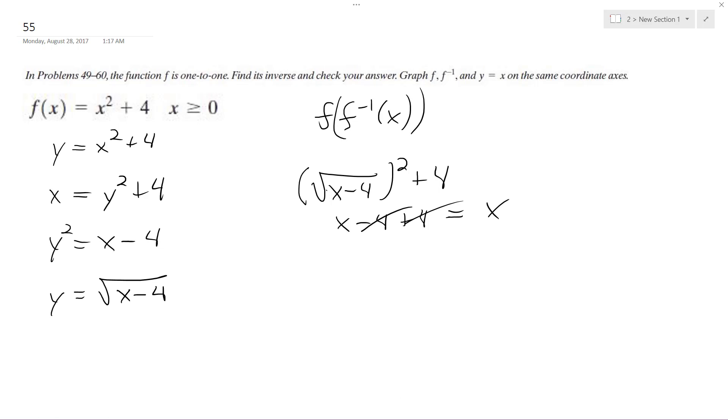And the graph for this is going to look like this. Where x squared plus 4 is right here. And the inverse is right here. That's it. Thank you.